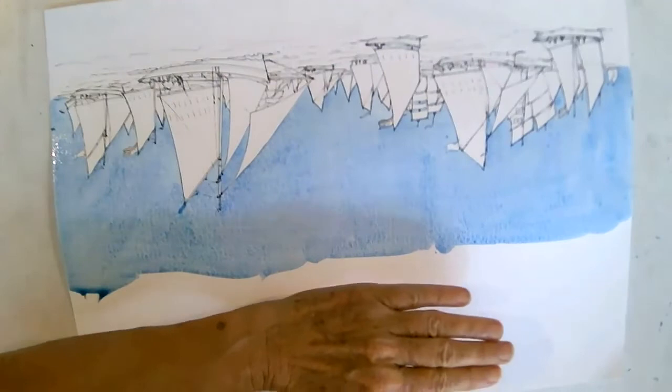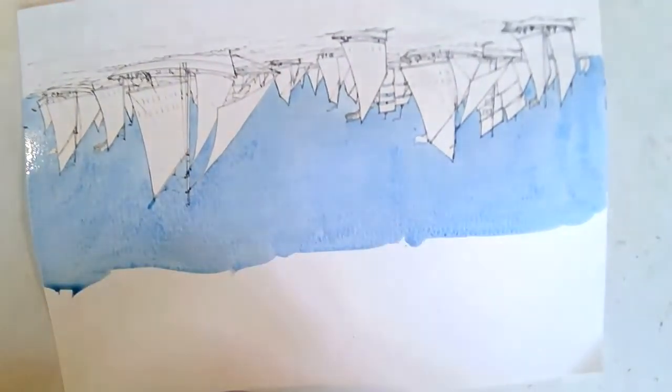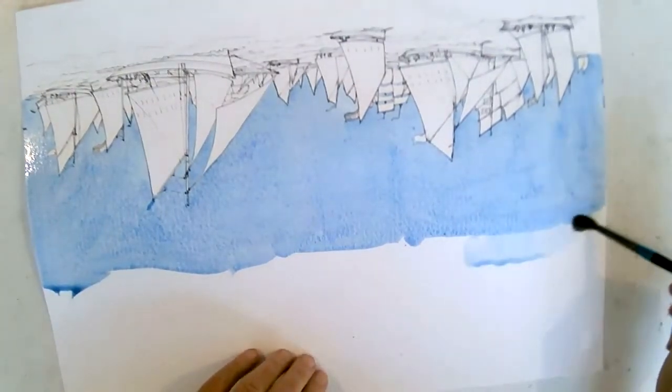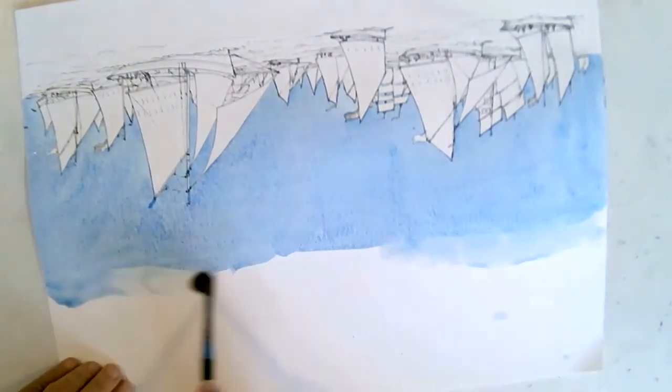If this was going in a frame, it wouldn't matter because you'd have a mount there, but because this is going on a double page spread in a magazine, I'm just going to soften the edge of it. When it's still wet enough to blend. Here we go.